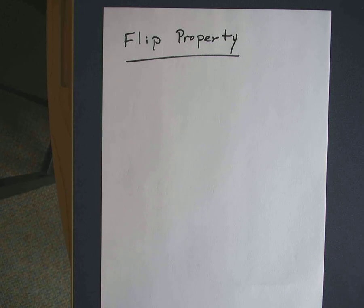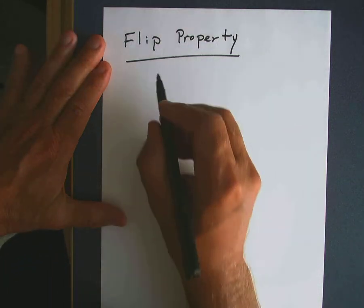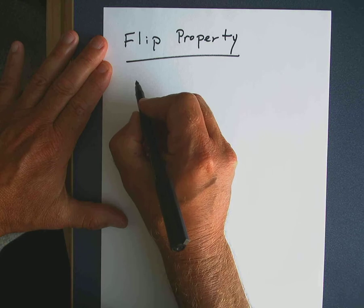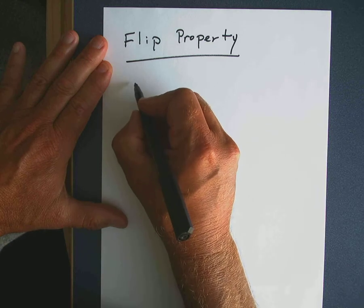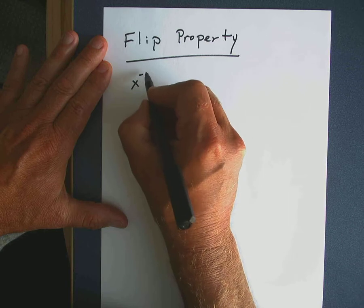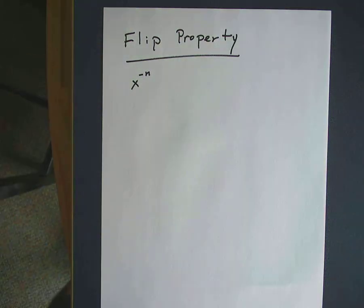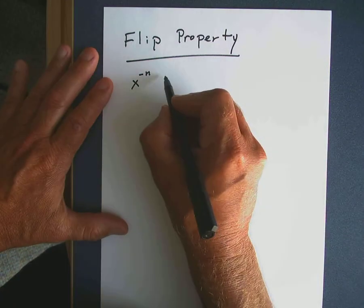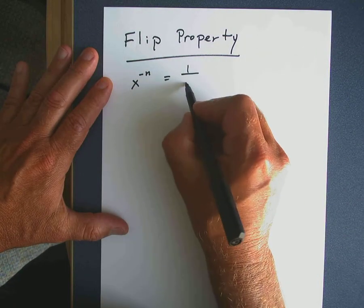There is no property at this point called the flip property, so if we're going to actually use something like that, we need to prove that it works. So I'm going to start with an expression like this. Let's say we have some base x raised to a negative power, x to negative n. By definition, we know that this is 1 over x to the n.